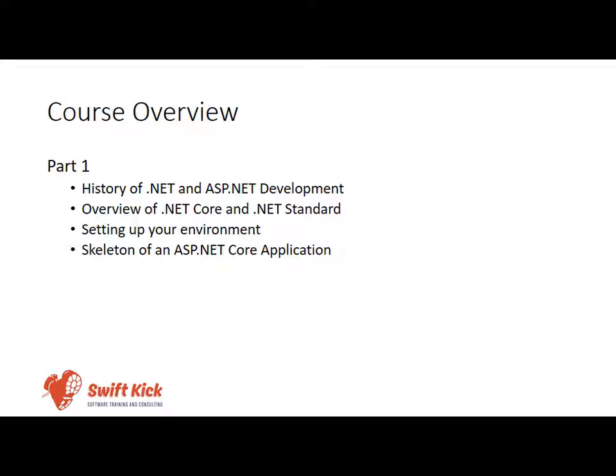How is this course going to be broken out? There are three parts. The first part is a simple history of .NET and ASP.NET development — where it all began and how web developers on the Microsoft stack have progressed over the past 15 years. That leads into a discussion of .NET Core and specifically the .NET Standard — how we can develop cross-platform applications on .NET Core when the .NET Framework was limiting us to Windows only. We will also dive into your environment and show you how to set everything up inside Ubuntu, including .NET Core, VS Code, and Node.js. Finally, we will wrap up part 1 with a skeleton tour of an ASP.NET Core application.